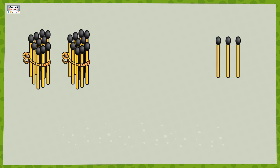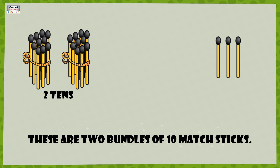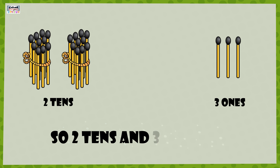These are two bundles of 10 matchsticks in each, so it is two 10s and these are three ones, so two 10s and three ones is equal to 23.